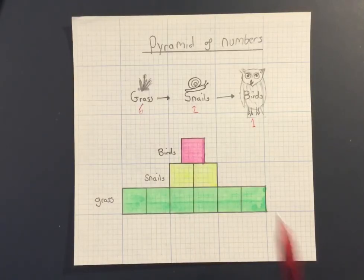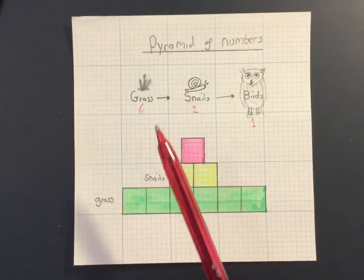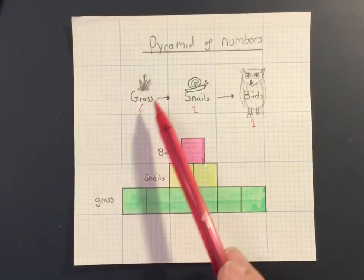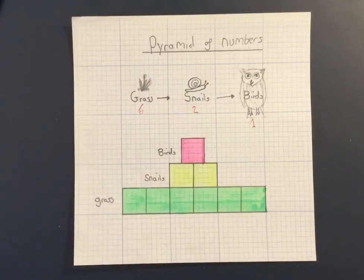Now there is a problem with these pyramids of numbers. What if we've got one really large animal organism as our producer? Well, you get a pyramid that looks a bit like this.